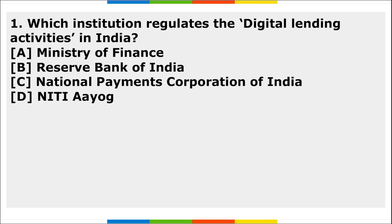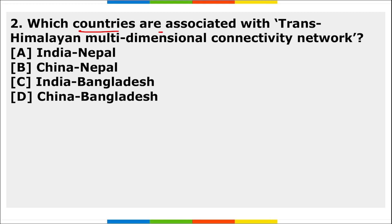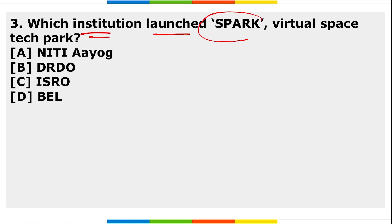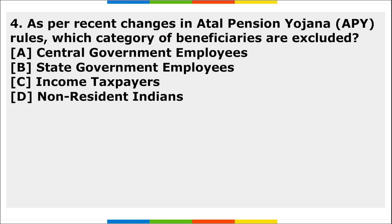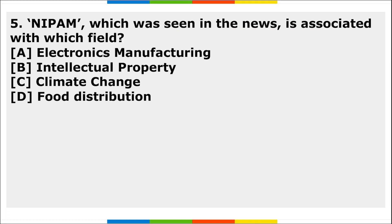Now for your homework: First, which institution regulates digital lending activities in India? Second, which countries are associated with the Trans-Himalayan Multi-Dimensional Connectivity Network? Third, which institution launched SPARK Virtual Space Technology Park? Fourth, as per recent changes in the Atal Pension Yojana rules, which category of beneficiaries are excluded? Fifth, NIPAM — which was seen in the news — is associated with which field? Comment your answers below.